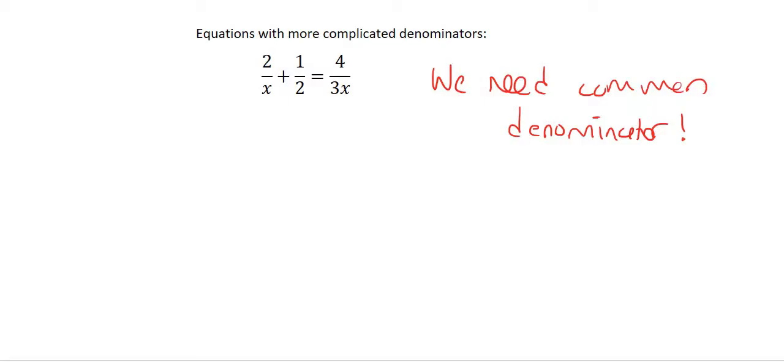So what could we get all of these into? We could get all of those into 6x. Let me show you how that would work. We could do that by multiplying this one by 6, we could multiply this one by 3x, and we could multiply this one by 2.